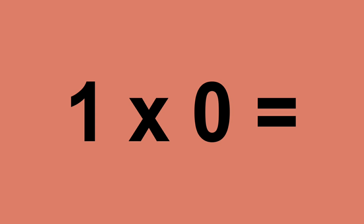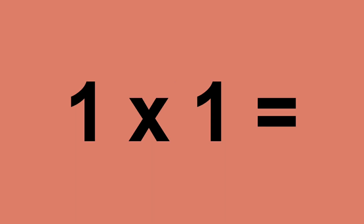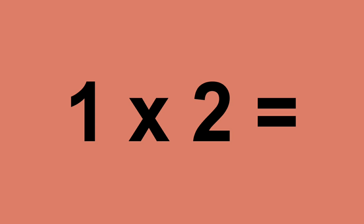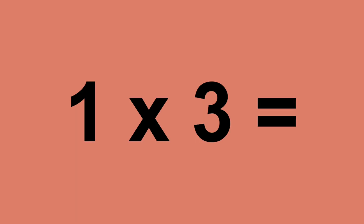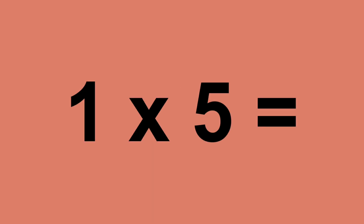One times zero equals zero. One times one equals one. One times two equals two. One times three equals three. One times four equals four.